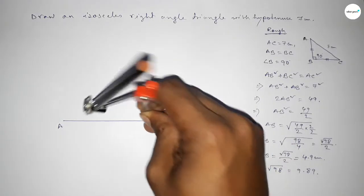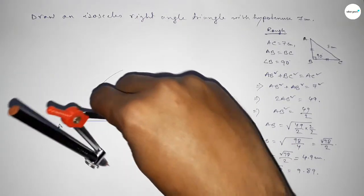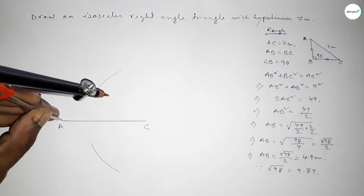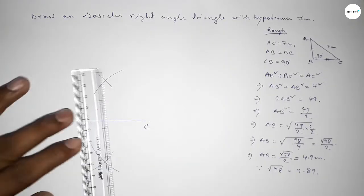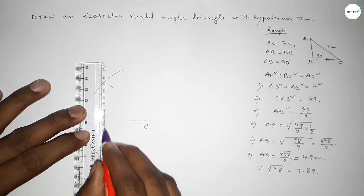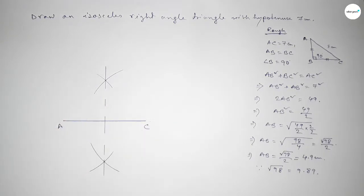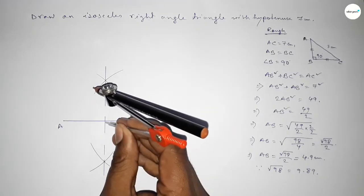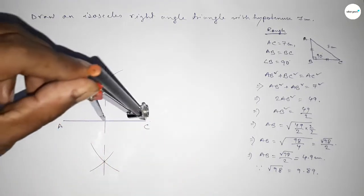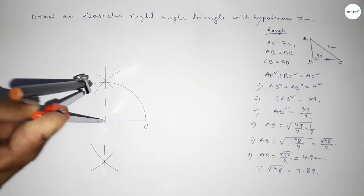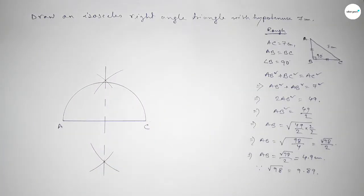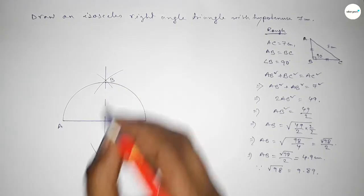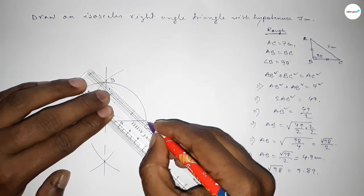Putting the compass at A and taking a radius greater than half of AC, drawing an arc. Then putting the compass at C with the same length and drawing another arc. Both curves intersect at two points. Joining these two intersection points gives the perpendicular bisector. Then putting the compass at the midpoint O, taking distance OA and OC, and drawing a semicircle.